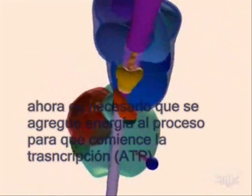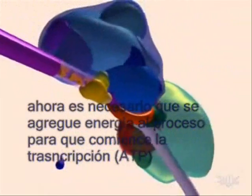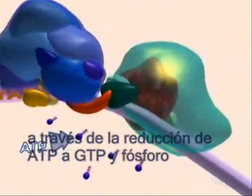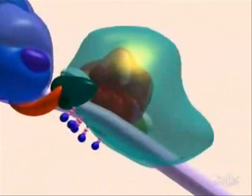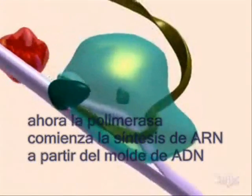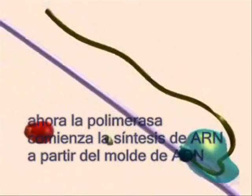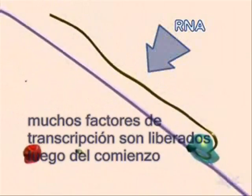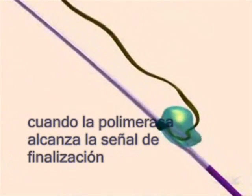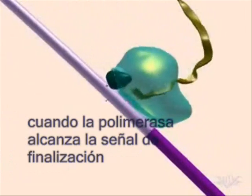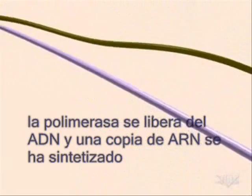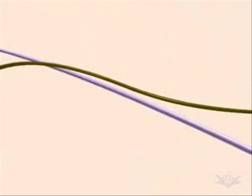Energy must be added to the system for transcription to begin. This energy is provided by the reduction of ATP into ADP and Pi. RNA polymerase then synthesizes an RNA template from the strand of DNA. Most factors are released after transcription begins. When the end of the transcription unit is reached, the RNA polymerase dissociates and the newly formed strand of RNA is released.